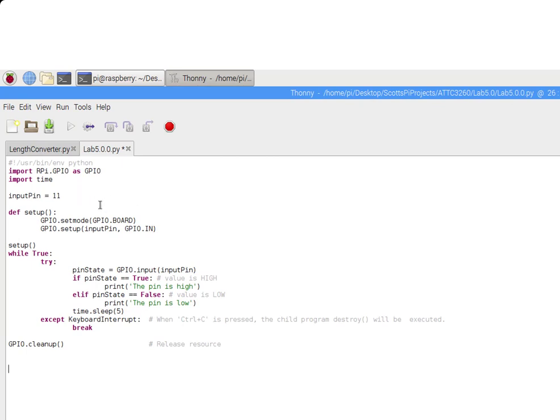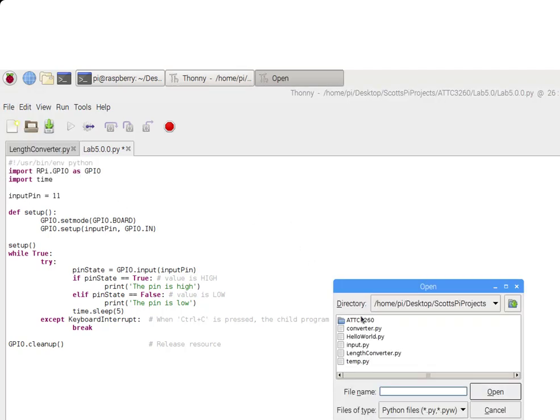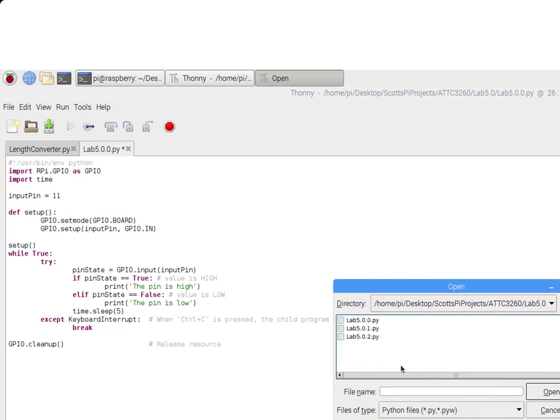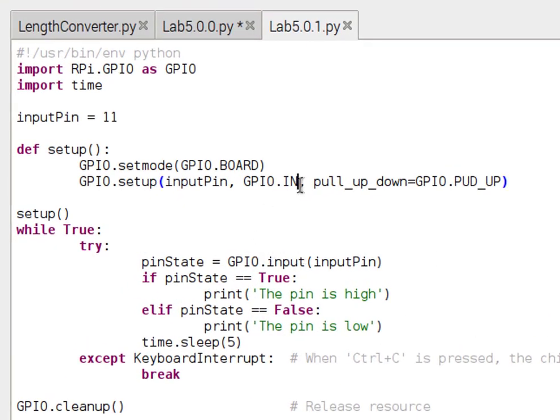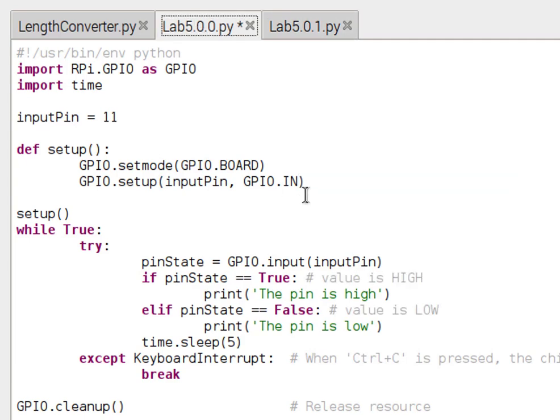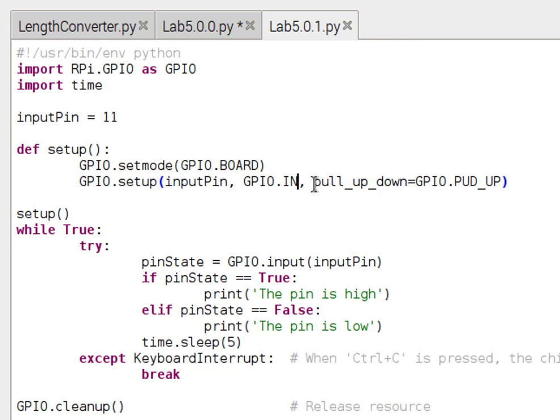Let's look at what we had to change in order to make this a pull up resistor. It can actually be done simply through the code the way the Raspberry Pi is built. It can take care of this. We're going to go to file and open our ATTC folder in lab 5, and we're working in lab 5.0.1. The only thing I've changed in here is this part of the code. If we go back to this other lab, we stopped right there. There happens to be a third argument we can pass in the setup function, and that argument is pull up down, and we are saying that this is a pull up resistor. So now this becomes a pull up resistor. Let's see what happens when we run this code and measure it with our multimeter.